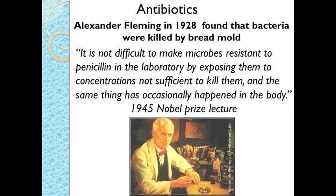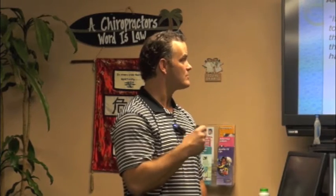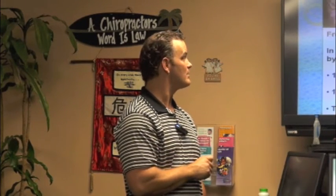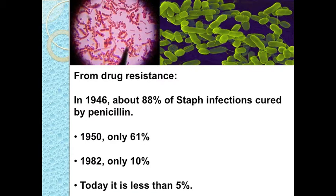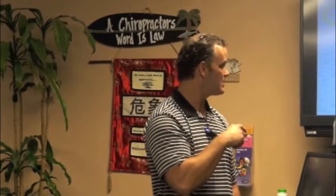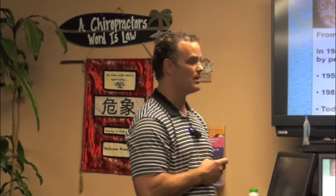Antibiotics — in 1928, Alexander Fleming found out that bread mold actually killed bacteria. This is where antibiotics came from. Back in 1945, in his Nobel Prize lecture, he realized that if you don't give a particular bacteria enough of that antibiotic — not sufficient to kill it — then it's going to become resistant and make it even worse. In 1946, 88% of staph infections were killed by penicillin. Four years later, only 61%. About 30 years later, only 10%. And now only about 5% of staph infections are killed by penicillin.